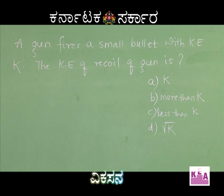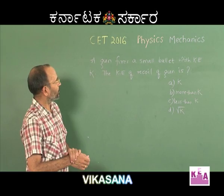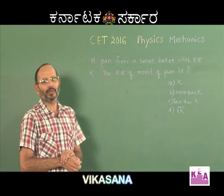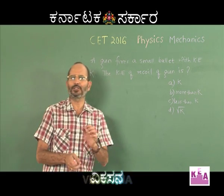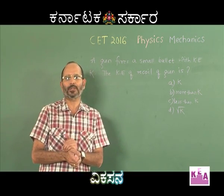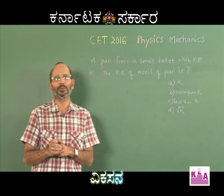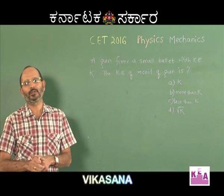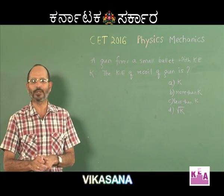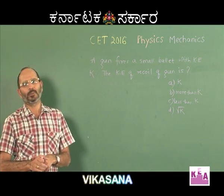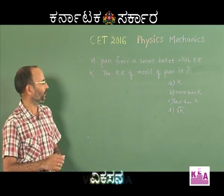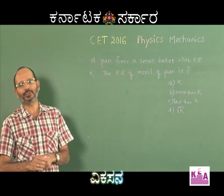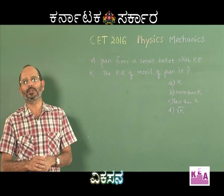I think you can immediately say that it should be less than k. The recoiling gun will have a very ordinary speed, and you cannot expect the kinetic energy of the recoil of the gun to be in any way comparable with the kinetic energy associated with the bullet. But still, if you insist on solving this and verifying the answer, you can always conserve the momentum.